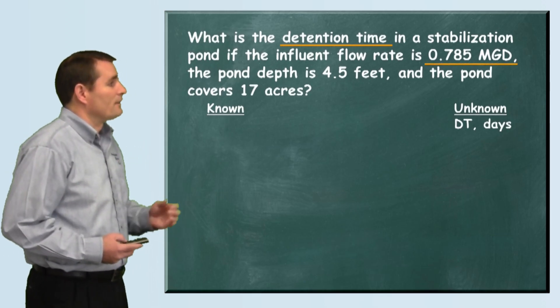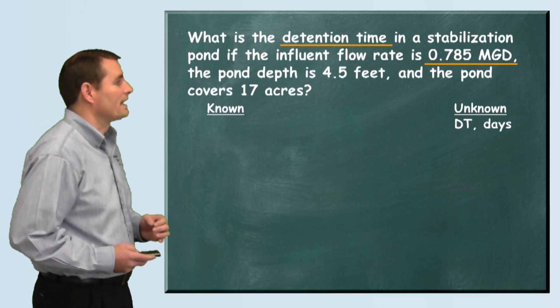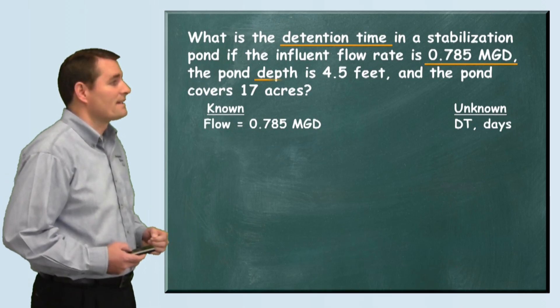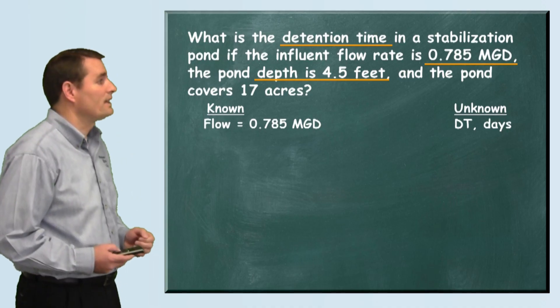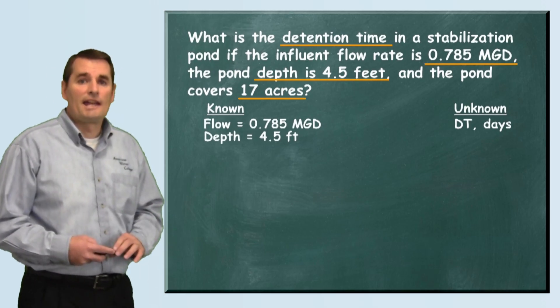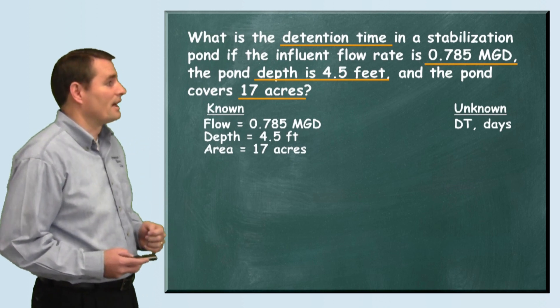They also tell us that the flow coming into the pond is 0.785 million gallons per day. The problem also states the depth is 4.5 feet and that the area of the pond is 17 acres. With this information we have enough to calculate the detention time.